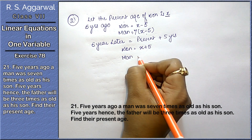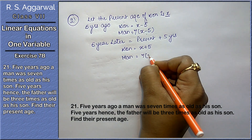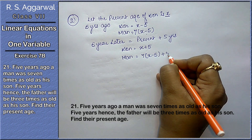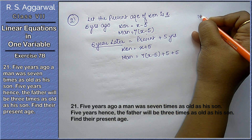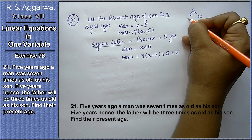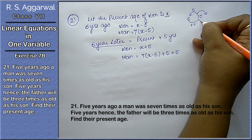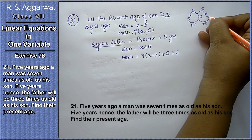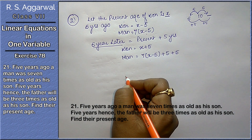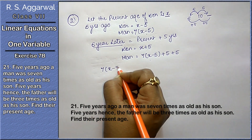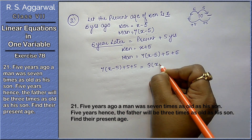And the man's age 5 years later: his present age plus 5 years. 5 years hence the man was 3 times as old as his son.